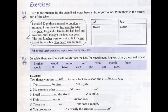A87. I studied English at a school in London last summer. I was there for two months, May and June. England is famous for bad food and weather, but I thought the food was good. The pub lunches were very nice. But it's true about the weather. Too much rain for me.